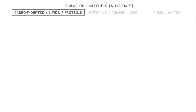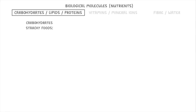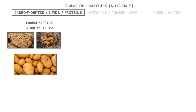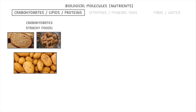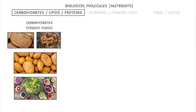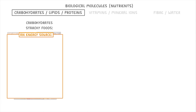Let's start off with carbohydrates, lipids and proteins, as these are the main nutrient groups that make up the large majority of our diets. Carbohydrates are found most in starchy foods like bread, pasta and potatoes, as well as in fruits and vegetables, and the main reason we need carbohydrates is as an energy source — they provide us with most of the energy